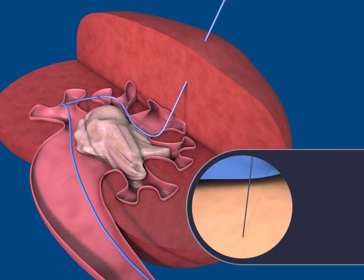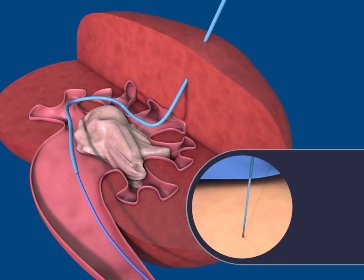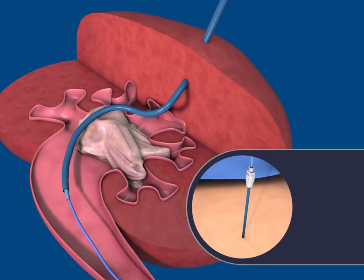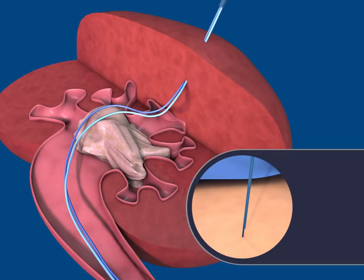Slide an 8-10 French dilator sheath over the guide wire. Slide the 8 French dilator past the stone and into the upper ureter. Slide the 10 French dilator past the stone and into the upper ureter. Remove the 8 French dilator. Insert the stiff working wire through the 10 French dilator down into the bladder. Remove the 10 French dilator.